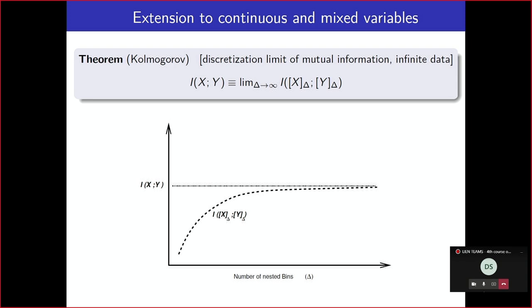In the remaining time, I'll show some more results. To apply this to the clinical dataset we discussed earlier, you need to adapt the multivariate information for mixed variables — both continuous and categorical. Mutual information on purely discrete variables is quite straightforward, but as soon as you have continuous variables it's more tricky.